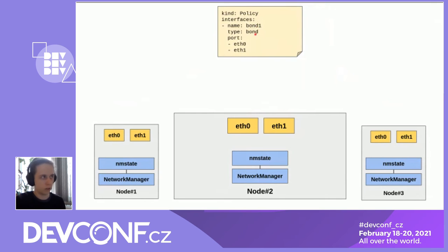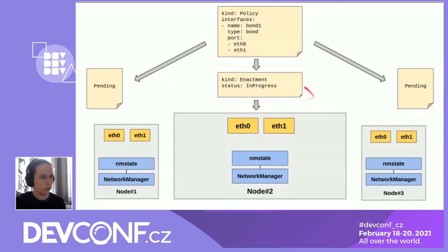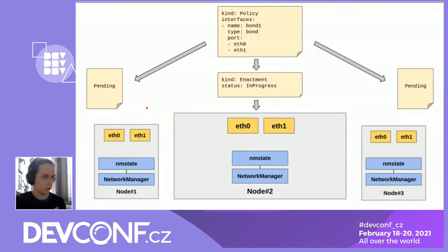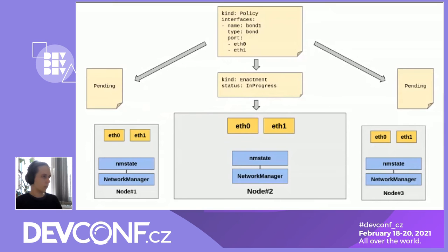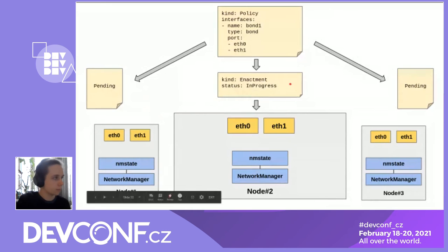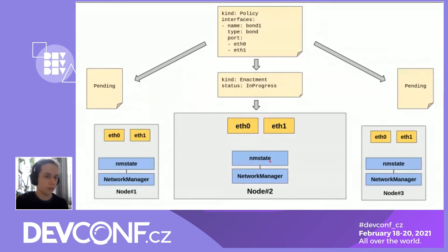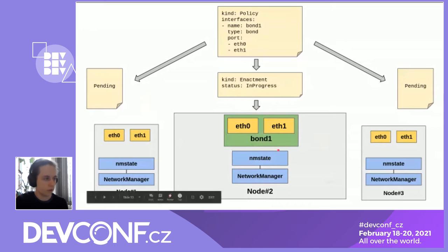The counterpart of reporting is configuration, driven by a Policy object where we declare the desired network state for all hosts matching that policy. Here we declare a policy saying we want a bond interface called bond0 with two ports: eth0 and eth1. When you apply this, nm-state creates an Enactment object for each node to monitor progress and debug issues. A key safety mechanism: configuration is applied one node at a time, so if it is disruptive it won't take down all nodes at once.